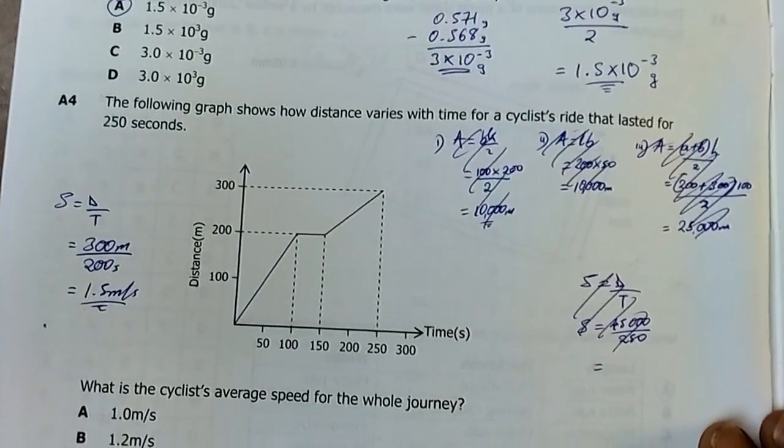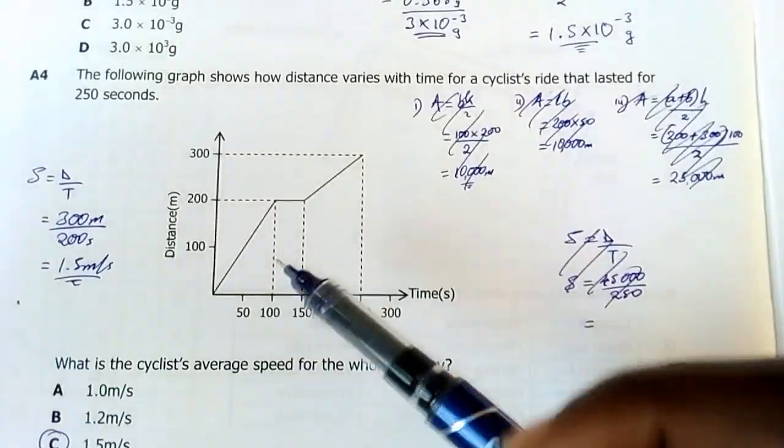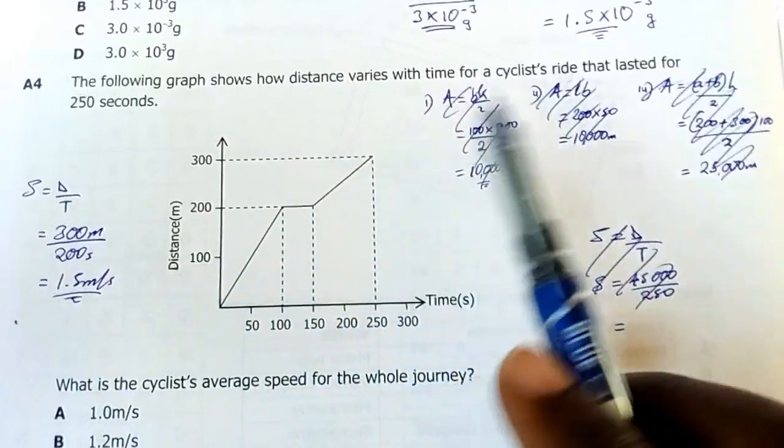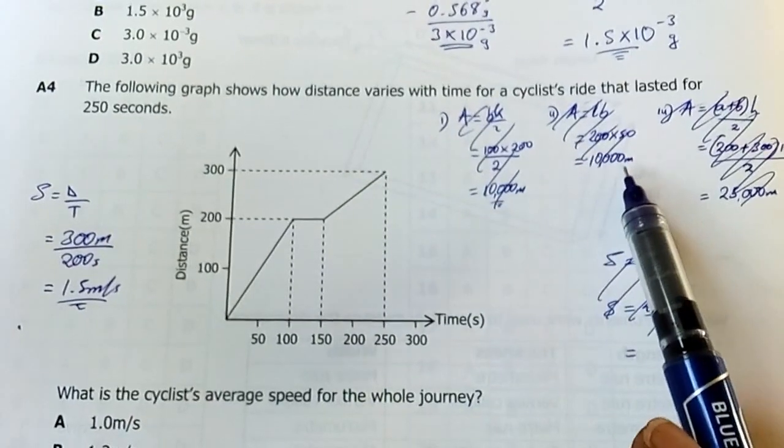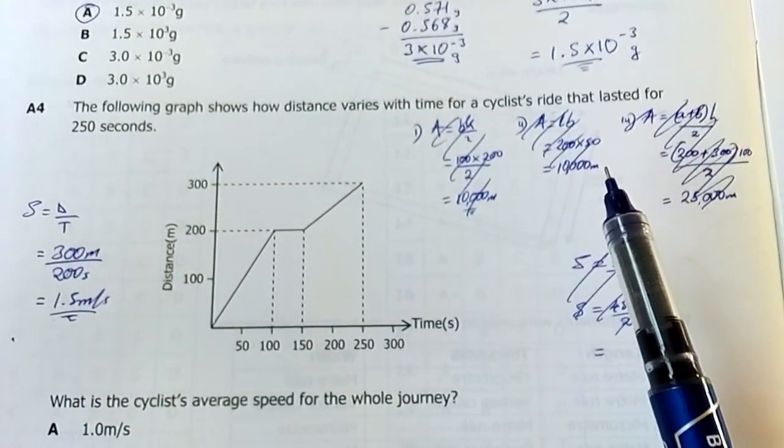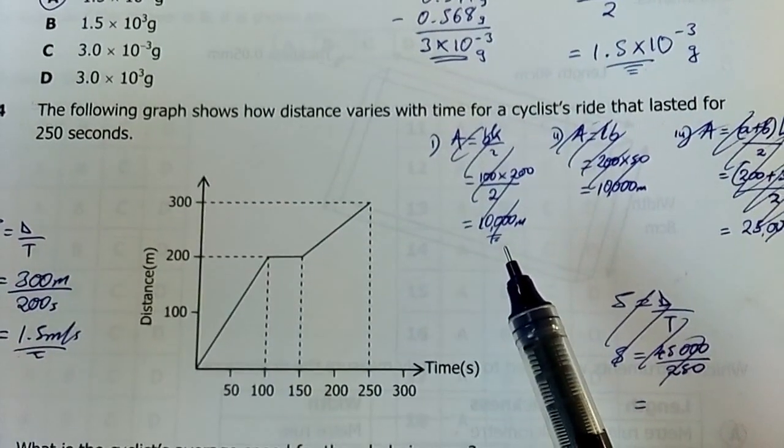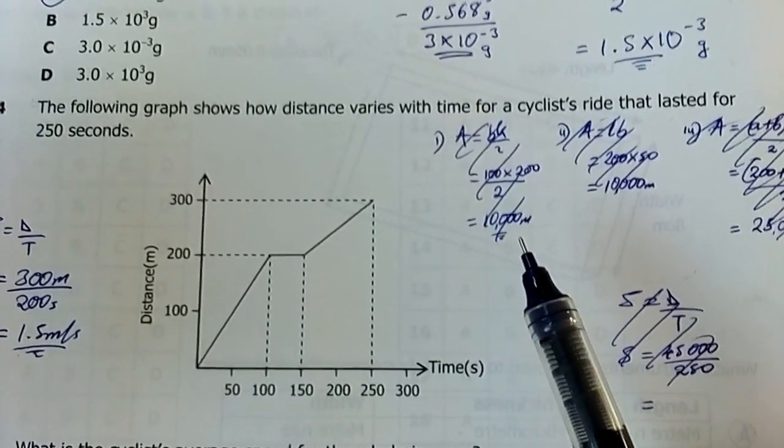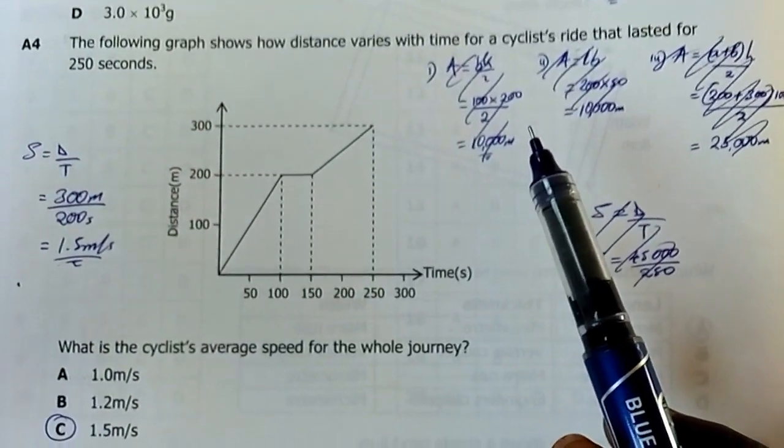A4: I almost went off-road because I didn't pay attention to see whether this was a distance or velocity time graph. Afterwards I realized it was actually a distance graph, then I had to redo this part. Even when I was calculating I realized these values were so big. Number four: The following graph shows how distance varies with time for a cyclist's ride that lasted for 250 seconds. What is the cyclist's average speed for the whole journey?